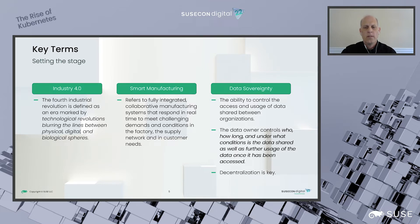One of the elements is the enablement of smart factories, which brings us to our second definition of smart manufacturing. NIST defines smart manufacturing as a fully integrated, collaborative manufacturing system that responds in real time to meet changing demands and conditions in the factory, in the supply chain network, and in customer needs.